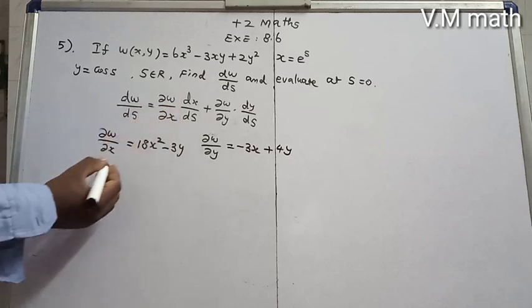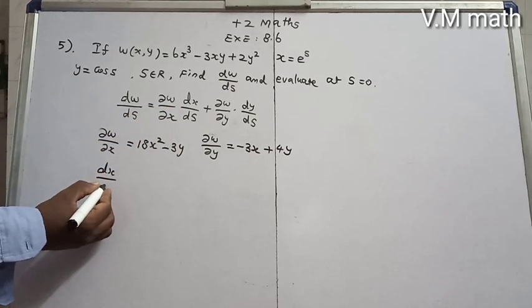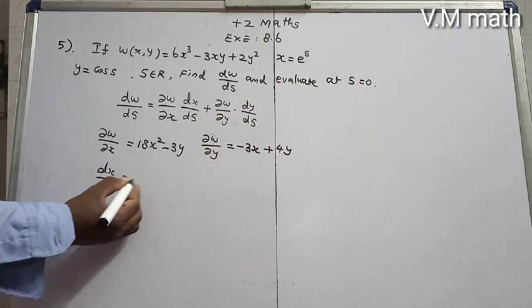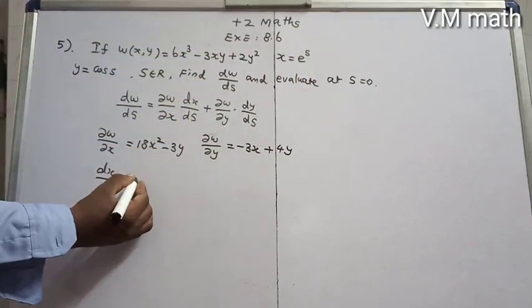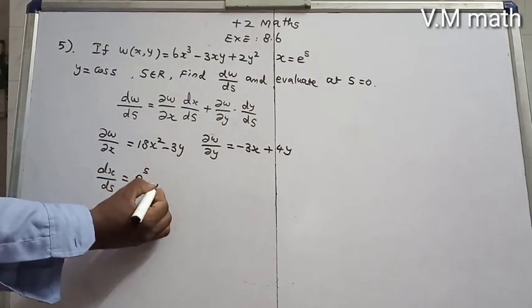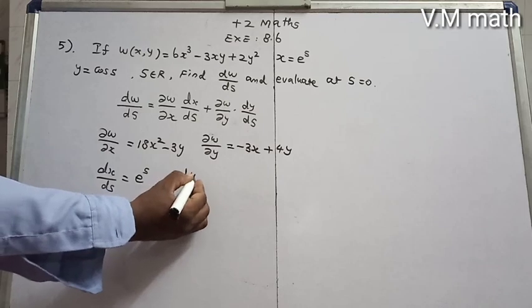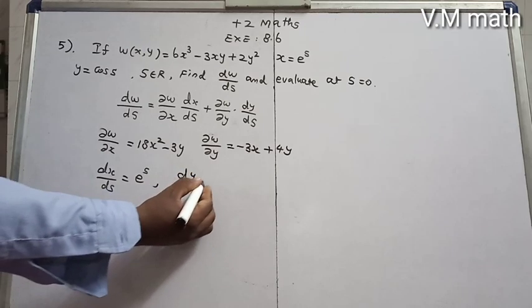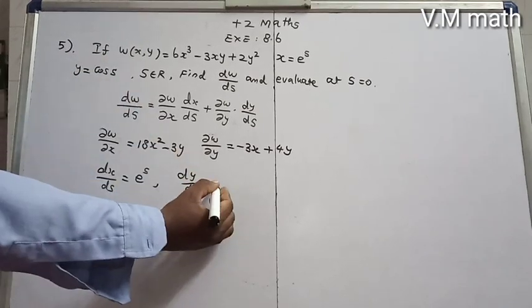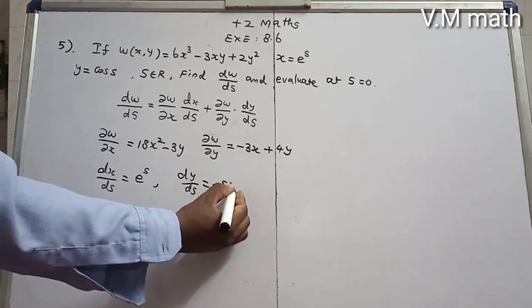Next, dx/ds equals e^s by differentiation, and dy/ds for cos(s) is -sin(s).